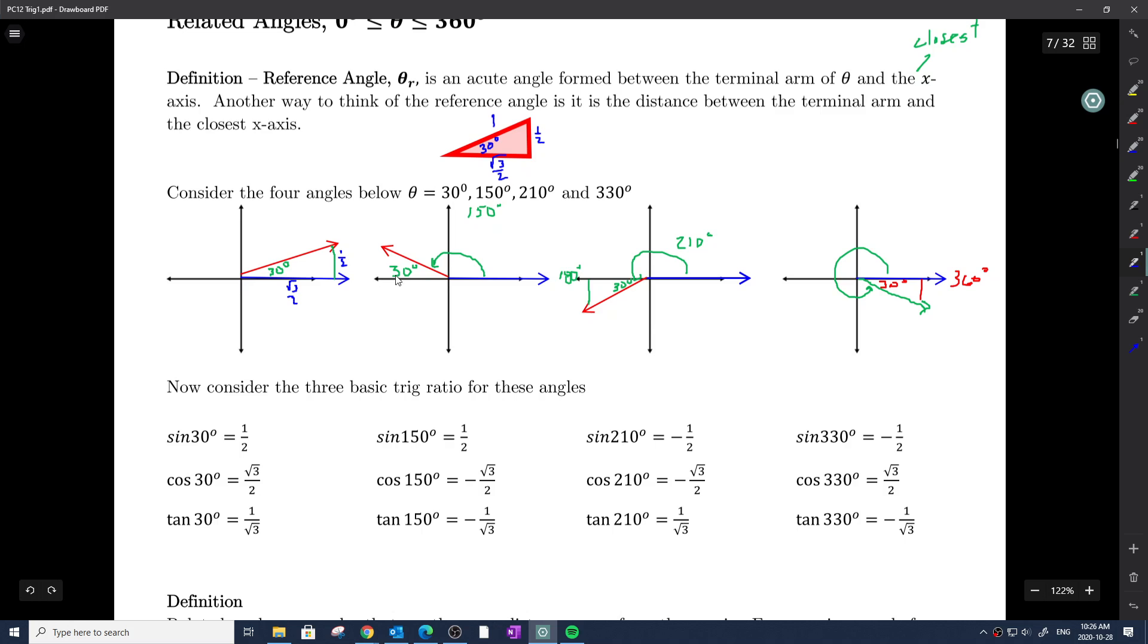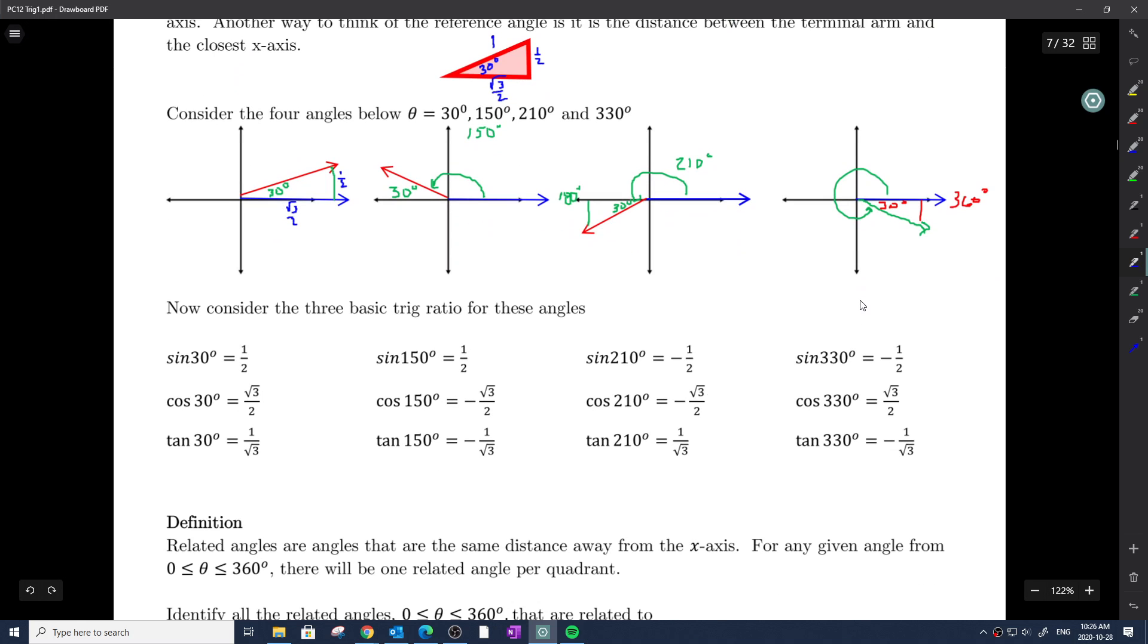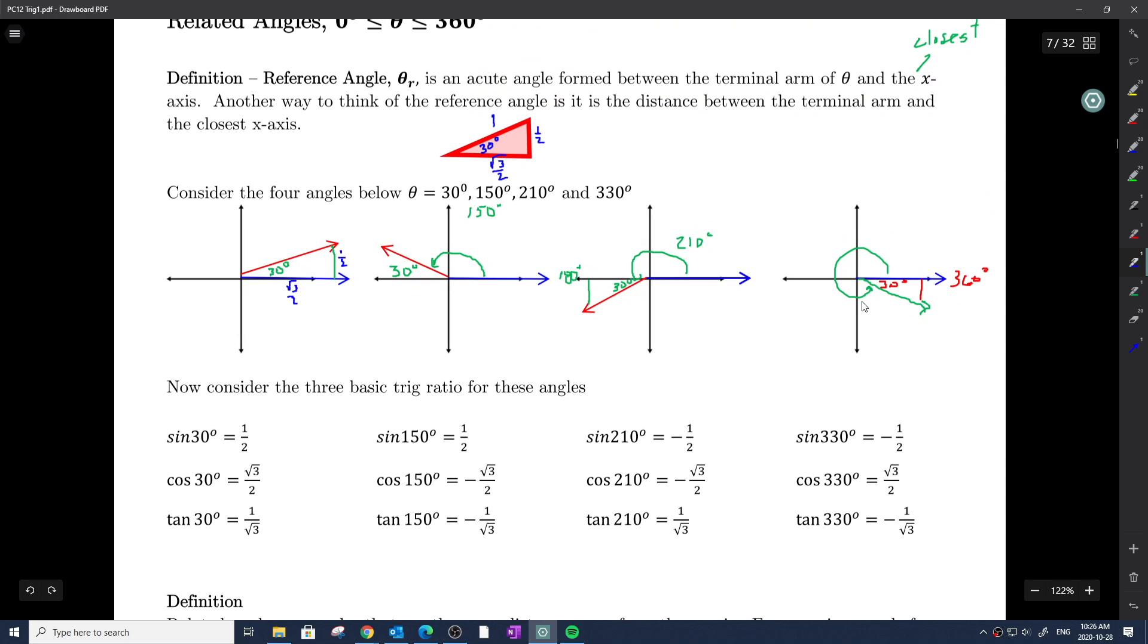Number 1, they are related. How? Let's just take a peek. There's the relation, or the definition of a related angle. They have something in common, that is, they're all 30 degrees away from the x-axis.